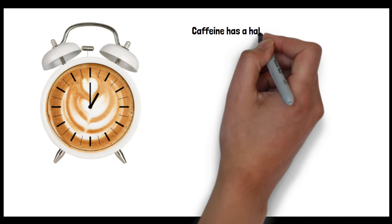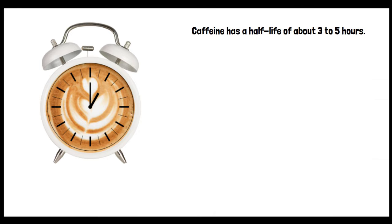Caffeine has a half-life of about three to five hours, which means it takes that long for just half of the caffeine consumed to be eliminated from your body. Depending on your sensitivity, the remaining caffeine could interfere with your ability to fall asleep or reach the deep stages of sleep.